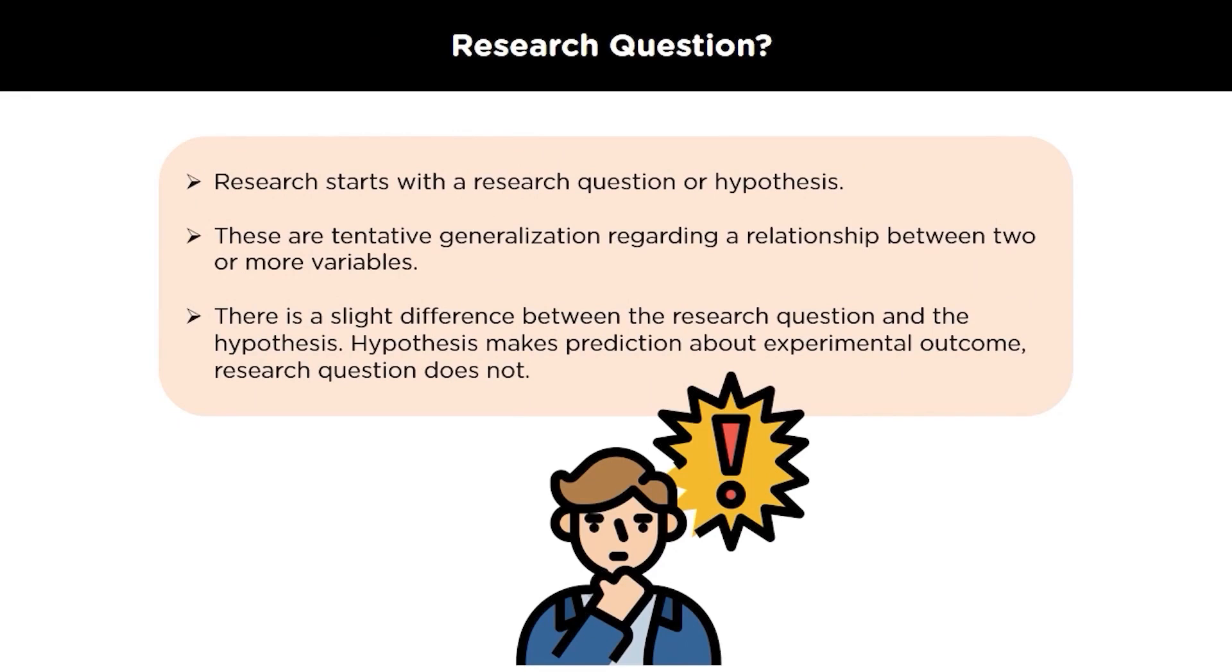Research objectives are clear statements of what you aim to achieve through your research. There are specific actions that you will take and act as a milestone that will help you complete your research. A research question is a specific concern that you will answer through research. It is derived from a research problem but is based on a study design.